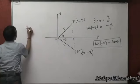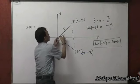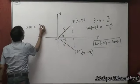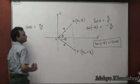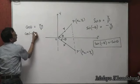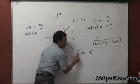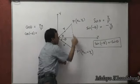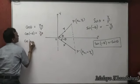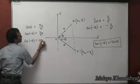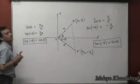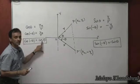For cos theta: cos θ = x0/r. Cos of minus theta uses the x coordinate of P prime, which is x0 — the same as P. So cos(−θ) = x0/r = cos θ. That is another important result: cos(−θ) = cos θ.